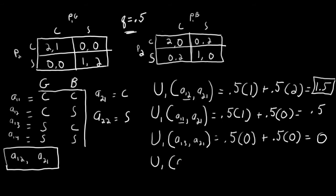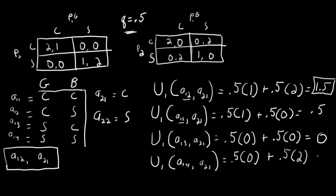The last action to check is A1-4 against A2-1. A1-4 says no matter what, Player 1 always goes to the sporting event. When Player 1 wants to match, he goes to the sporting event, but because Player 2 is always going to the concert, Player 1 earns nothing. However, when Player 1 is the bad type and wants to mismatch, he will indeed mismatch because Player 2 always goes to the concert — so half of the time he earns 2. This gives a total expected utility of 1.